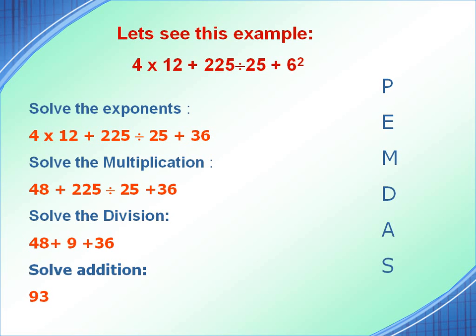Now next step is to solve for multiplication, and we will reach 48 + 225 ÷ 25 + 36. Now solve for division, and you will finally reach 48 + 9 + 36. On further solving it you will get 93 as your answer.